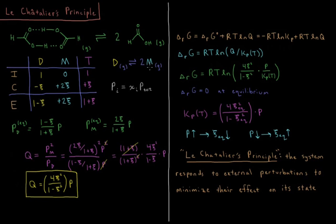What we want to know is what is the equilibrium constant and how does that change with pressure. Let's build what we call an ICE table from general chemistry. We take each quantity in the reaction and look at its concentration or number of moles initially, what it changes during the reaction, and its equilibrium value. Let's assume we start with the dimer at one bar of pressure, the monomer starting at zero, so the total pressure equals one plus zero, which is one.